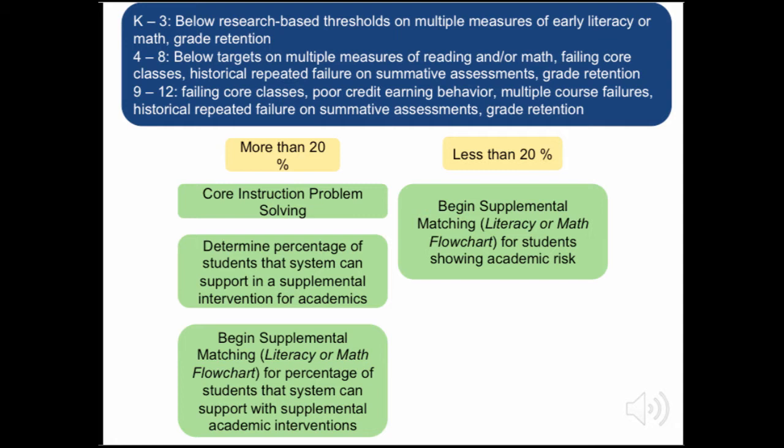In grades 4-8, academic risk can be determined by falling below targets on multiple measures of reading and/or math, failing core classes, historical repeated failure on summative assessments, and grade retention. In grades 9-12, academic risk can be determined by failing core classes, core credit earning behavior, multiple course failures, historical repeated failure on summative assessments, and grade retention.